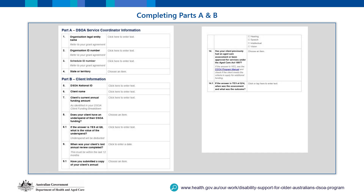When completing questions in Part A, you can refer to your program schedule or grant agreement. When completing Part B, ensure to list your client's correct Decelle National ID — Decelle IDs should only include four digits. Make sure you list any underspend for your client in response to this question. You may wish to contact your Funding Arrangement Manager at the Community Grants Hub in your relevant state or territory for further information.